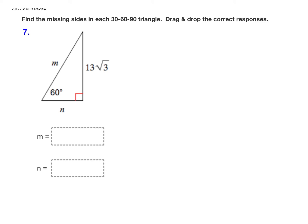For our final 30-60-90 triangle, notice we're given the side opposite the 60 degree angle. The long leg is 13 root 3. We want to start by finding the short leg, which is across from the 30 degree angle, so we need to find n first. We can use the relationship between the long leg and the short leg.